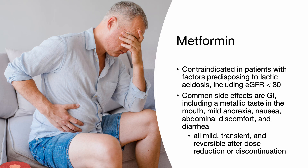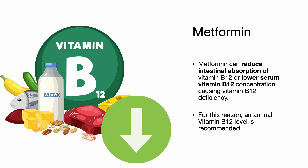Metformin is contraindicated in patients with factors predisposing to lactic acidosis, including an eGFR of less than 30. The most common side effects are gastrointestinal, including a metallic taste in the mouth, mild anorexia, nausea, abdominal discomfort, and soft bowel movements or diarrhea. These symptoms are usually mild, transient, and reversible after dose reduction or discontinuation. Metformin can also reduce intestinal absorption of vitamin B12, causing deficiency, so an annual vitamin B12 level is recommended.